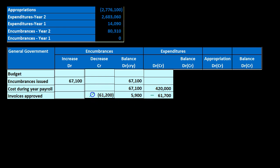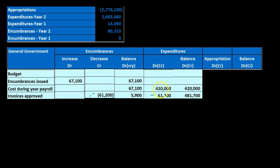Note that the encumbrance and expenditure amounts aren't the same because the encumbrance is an estimate and the expenditure is the actual amount. Also, the encumbrance balance differs because there are still encumbrances outstanding — some invoices that we expect to happen in the future. The expenditure is recorded at the actual amount, which differs from the related encumbrances. So we're increasing expenditures: this is the expense related to amounts that weren't encumbered, and then the expenditures corresponding to the decrease in encumbrances, giving us our ending expenditure balance.